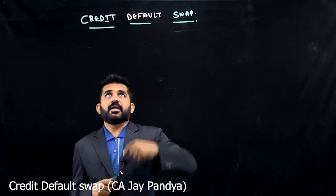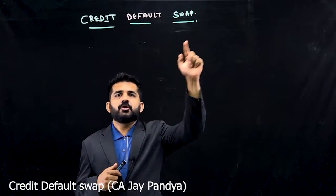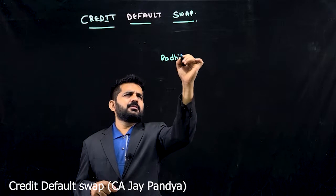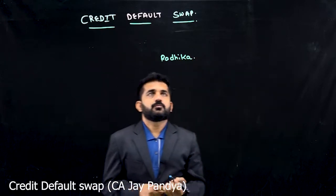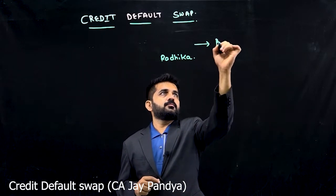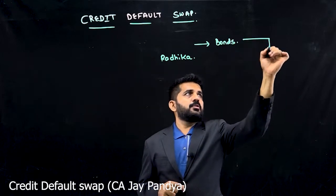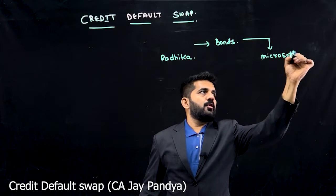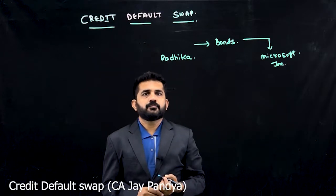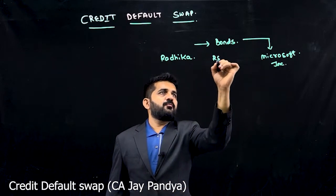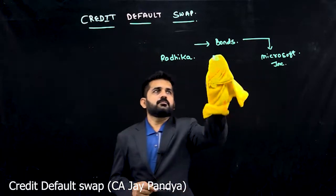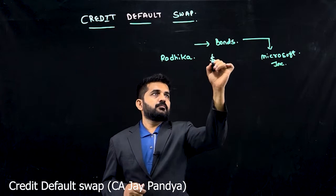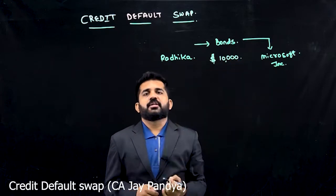Hello friends, we will be learning today about credit default swap. Let us understand in the form of an example. Say there is one person Radhika, and she purchases bonds of Microsoft Incorporation. The bonds are worth $10,000.